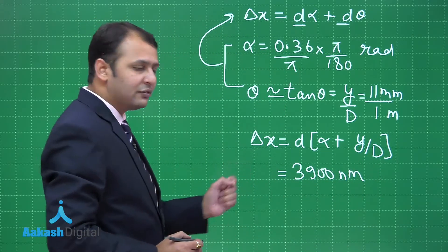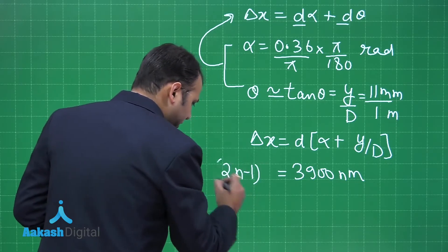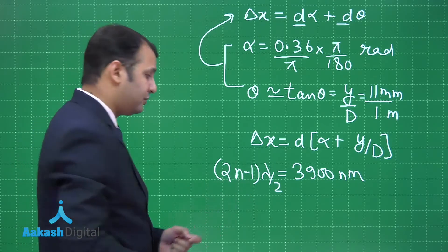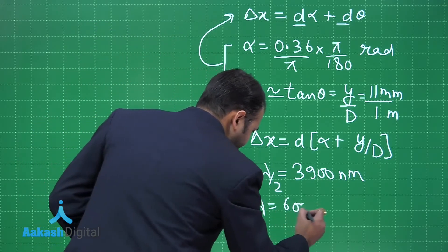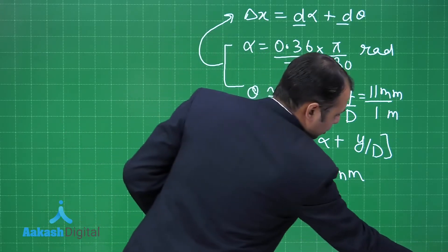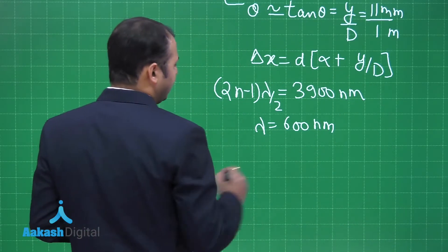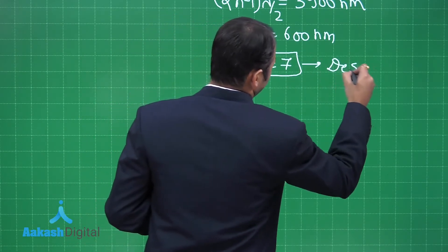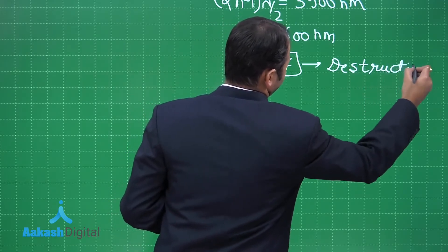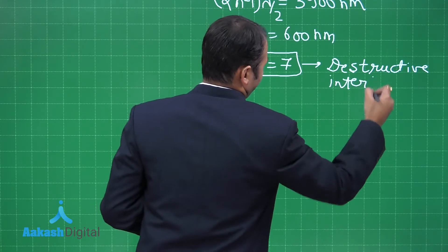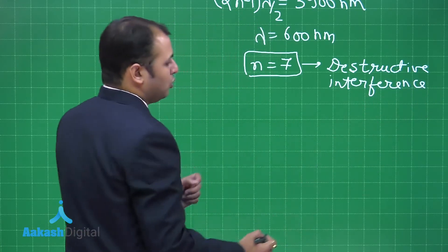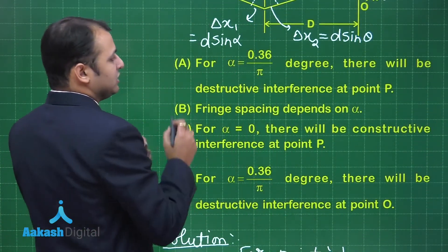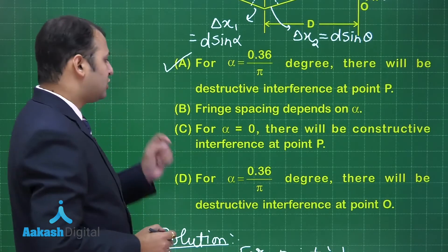If you want to have destructive interference, the condition for that would be 2n minus 1 lambda by 2. If you get n as a whole number here, then definitely it will be destructive interference. Put the value of lambda as 600 nanometers. Putting the value of lambda of 600 nanometers, you will find that n equals 7. That means at P, destructive interference will happen. If you see the first option, for alpha of this value, destructive interference at point P - yes, it will happen.